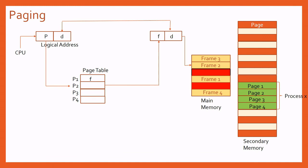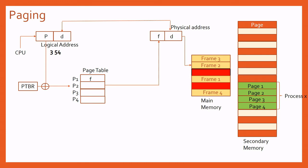For example, if the CPU wants to access logical address 3-54 (page 3, offset 54), we look up the page table and find page 3 is stored in frame 3 with base address 1,000. Combining the base address 1,000 with offset 54 gives the physical address. This completes the concept of paging and address translation.